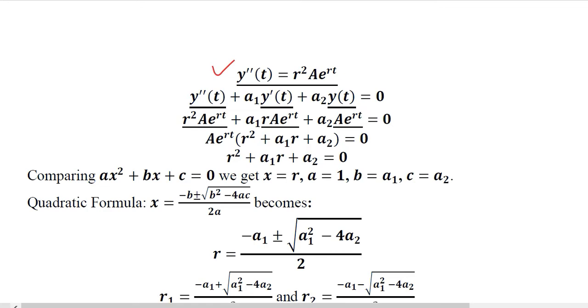Now we put these values here, the value substituted of Y bar bar T and this is Y bar T, this is Y T. Now we take A exponent of R T as common and we are left with this equation.